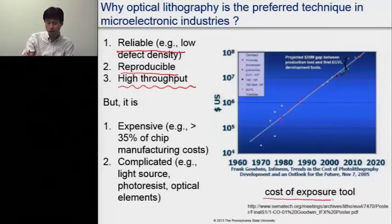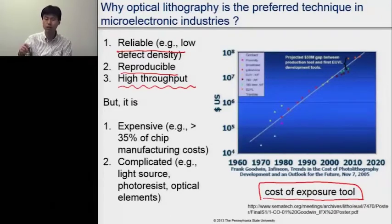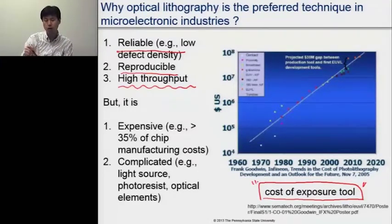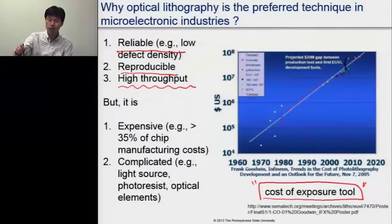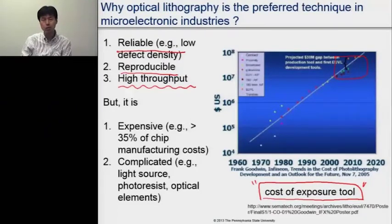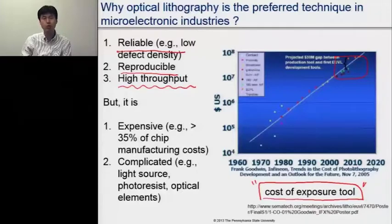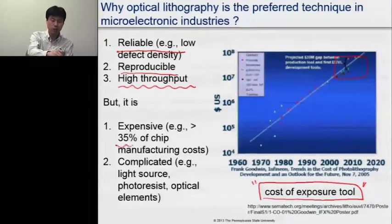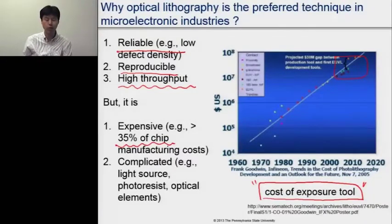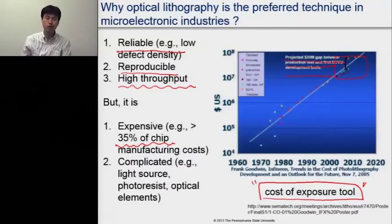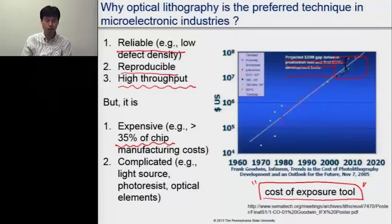As you can see from these graphs, as technology has developed to achieve much smaller feature sizes, the exposure tool price has also gotten more expensive. Right now, if somebody wants to buy a full set with all accessories, each single tool costs more than a hundred million dollars. Because of these very expensive exposure tools, mask sets, and related items, the lithography process itself takes more than 35% of the entire chip manufacturing cost.